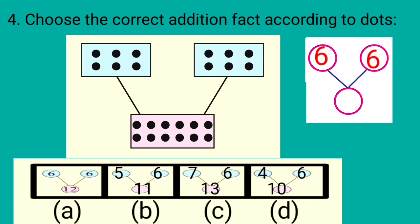So how many total dots are there at both sides? To know this, we will count the dots given in the box at the bottom. 1, 2, 3, 4, 5, 6, 7, 8, 9, 10, 11, 12. Total 12 dots are there at both sides. So 6 plus 6 is equal to 12. So we will put a tick mark at option A. 6 plus 6 is equal to 12.